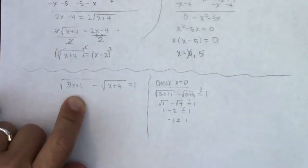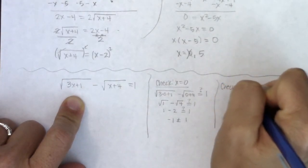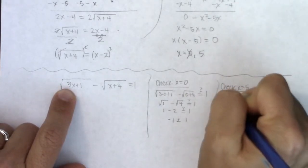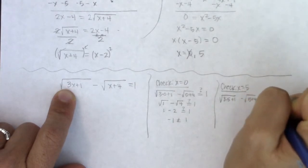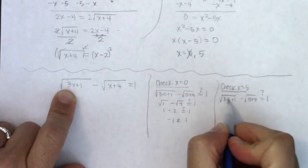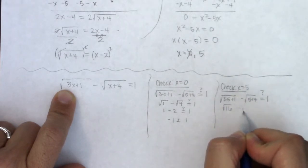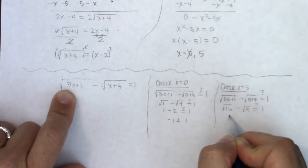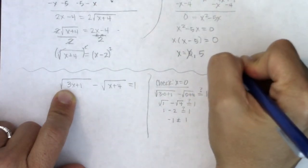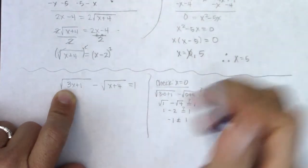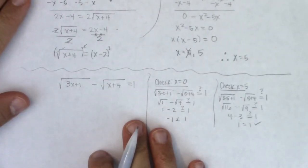Let's check x equals 5. Is the square root of 3 times 5 plus 1, minus the square root of 5 plus 4, equal to 1? 3 times 5 is 15, plus 1 is 16. The square root of 16 minus — 5 plus 4 is 9, and the square root of 9 is 3. Is 4 minus 3 equal to 1? Yes, it is. 1 equals 1. So my only solution is x equals 5.